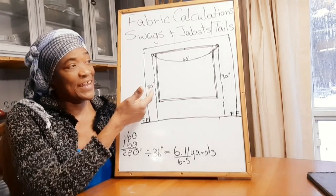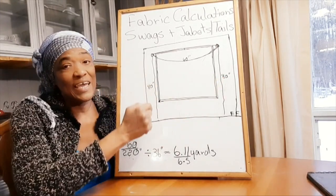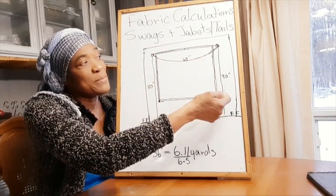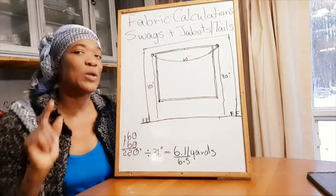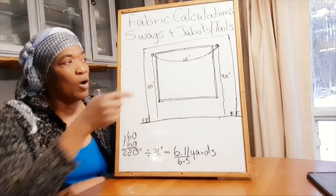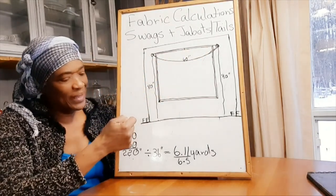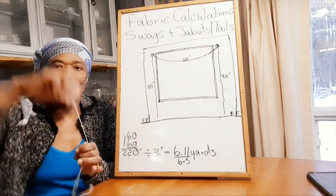I have 80 here, 80 here, so that means the tail here is going to be 80, the tail is going to be 80, and the swag across is going to be 60. Now I'm using these measurements as though my string is that measurement.